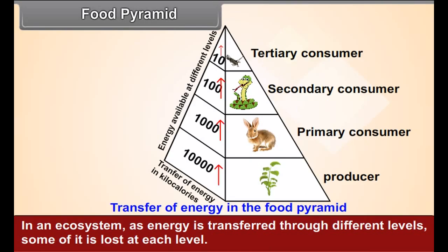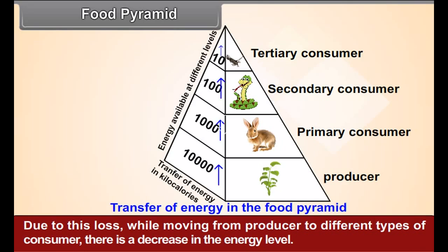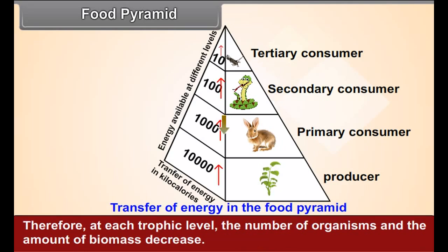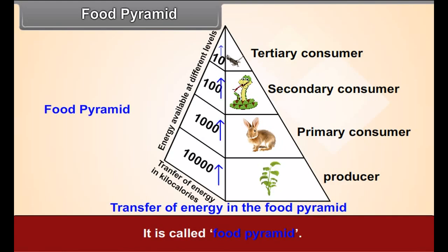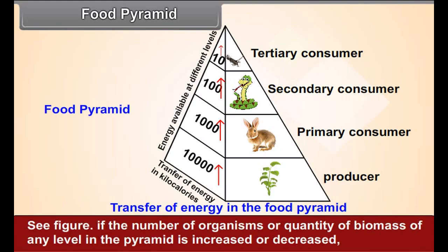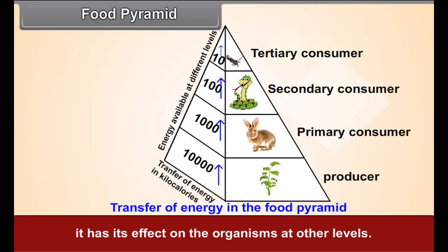Food Pyramid: In an ecosystem, as energy is transferred through different levels, some of it is lost at each level. Due to this loss, while moving from producer to different types of consumers, there is a decrease in the energy level. Therefore, at each trophic level, the number of organisms and the amount of biomass decrease. A diagrammatic representation of this process appears like a pyramid — it is called the food pyramid (see figure 11.4). If the number of organisms or quantity of biomass at any level in the pyramid is increased or decreased, it has its effect on the organisms at other levels.